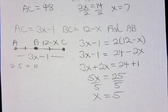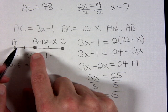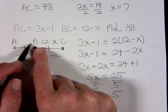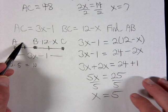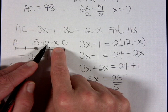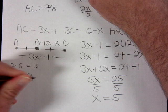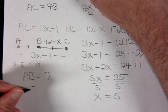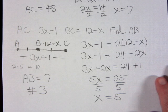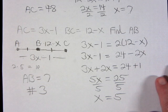Again, x equals 5 is not the final answer — we need the length of AB. Since AB wasn't given in terms of x, we plug 5 into BC instead, because AB and BC are congruent. So 12 minus 5 equals 7, meaning AB equals 7. This problem is number three on your quiz, so make sure you know it. That's it for this lesson — we'll be back with lesson 1-6.